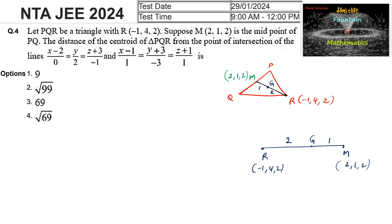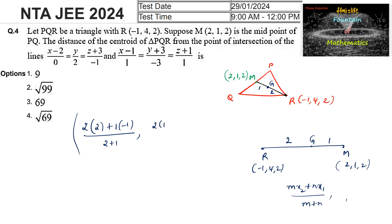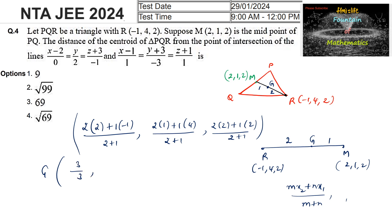We find the centroid using the section formula: (m·x₂ + n·x₁) / (m+n) and similarly for y and z coordinates. Applying this with ratio 2:1, we get the centroid G = (2·2 + 1·(−1))/3, (2·1 + 1·4)/3, (2·2 + 1·2)/3, which gives (3/3, 6/3, 6/3) = (1, 2, 2). So (1, 2, 2) is the centroid of the given triangle.